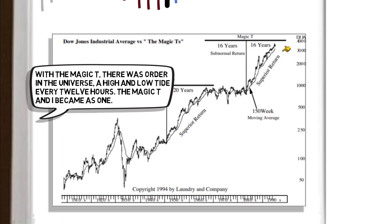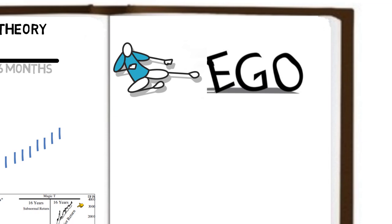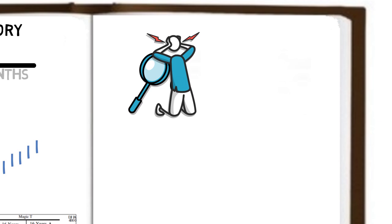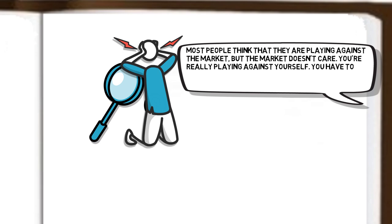A clear character trait is evident through the thoughts of Schwartz. He is detached from any ego, from any need to be right, and is far more focused on not losing money than anything else. Many traders have this in reverse, they have a desire to be right at all costs. Schwartz says, most people think that they are playing against the market, but the market doesn't care. You're really playing against yourself. You have to stop trying to will things to happen in order to prove that you're right.